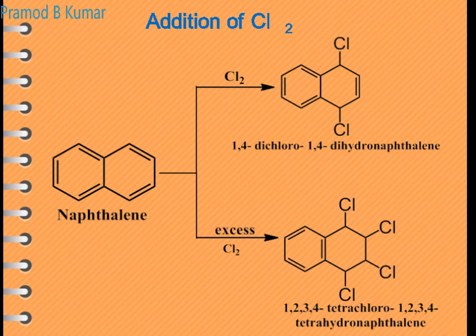Addition reactions with chlorine: when a lesser amount of chlorine is added to naphthalene, you get 1,4-dichloro-1,4-dihydronaphthalene. When excess chlorine is used, you get 1,2,3,4-tetrachloro-1,2,3,4-tetrahydronaphthalene.